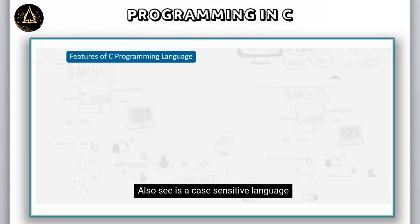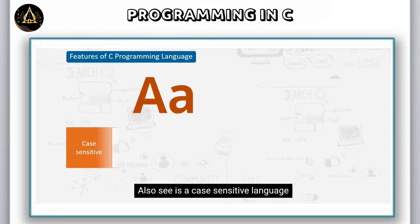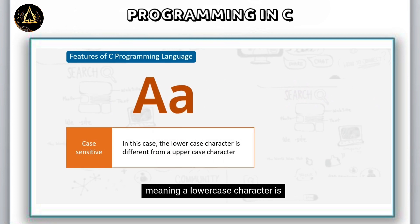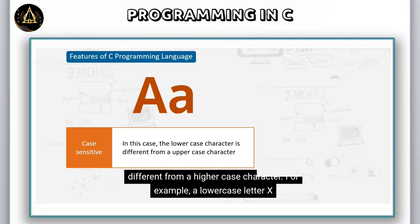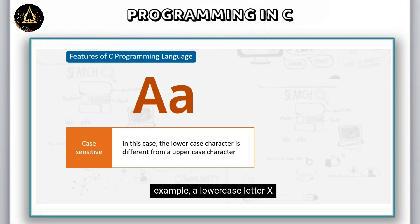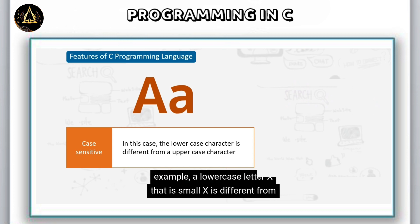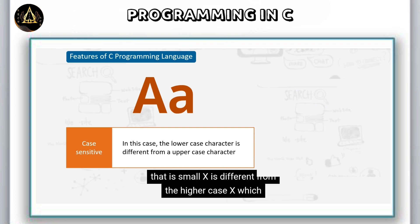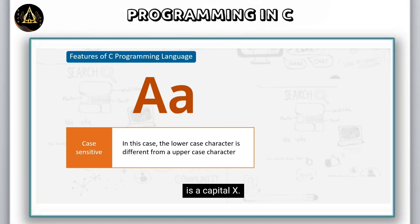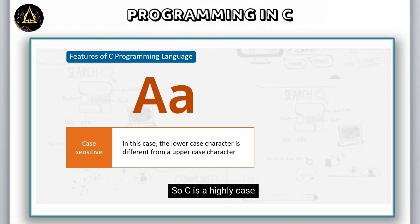C is a case sensitive language, meaning a lowercase character is different from an uppercase character. For example, a lowercase letter x (small x) is different from the uppercase X (capital X). So C is a highly case sensitive language.